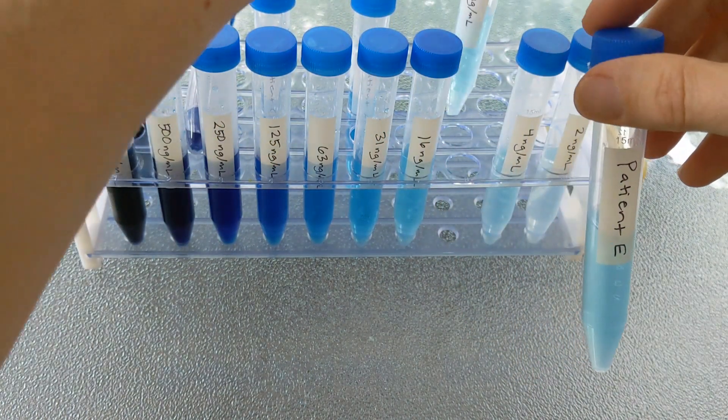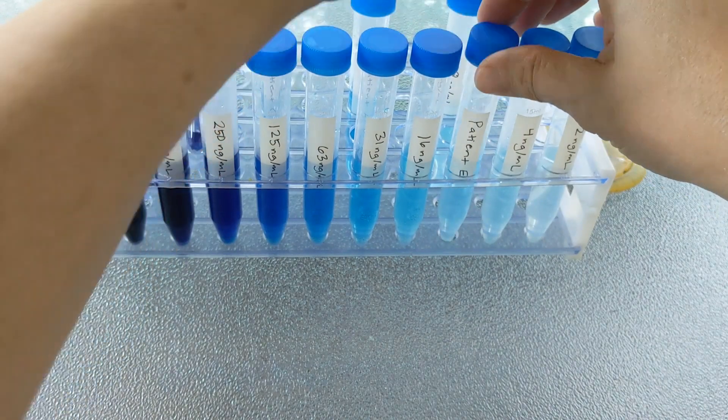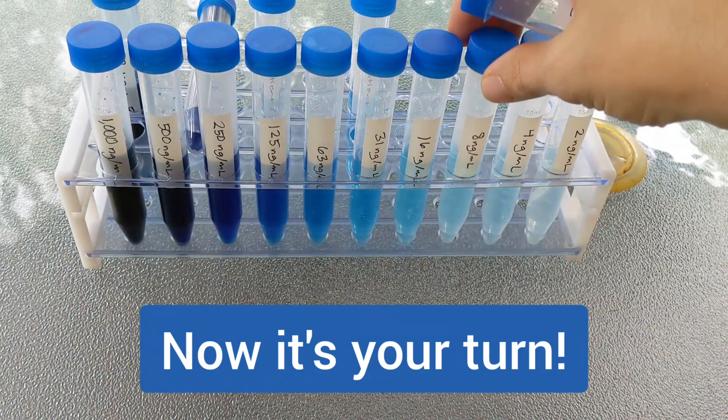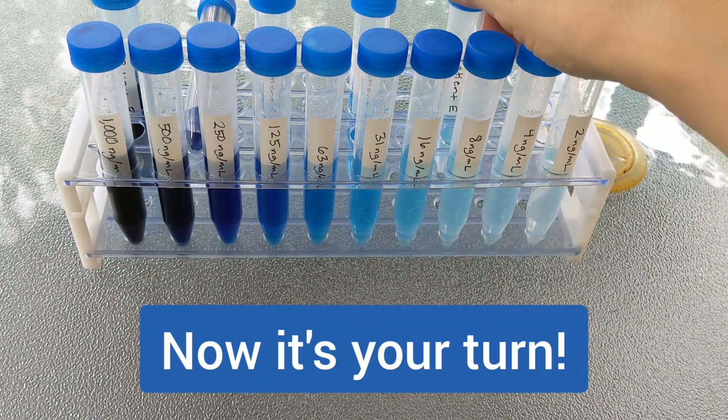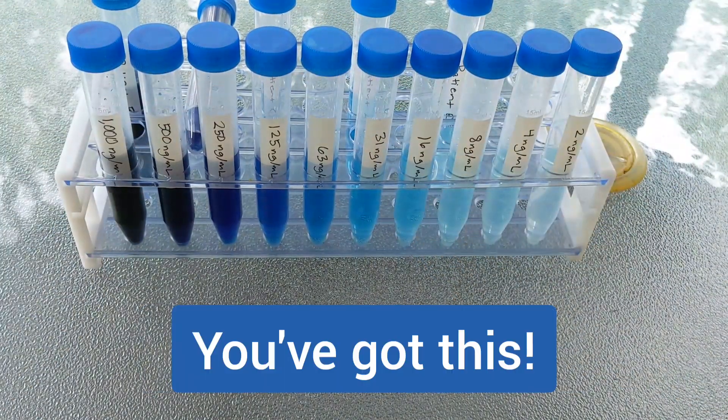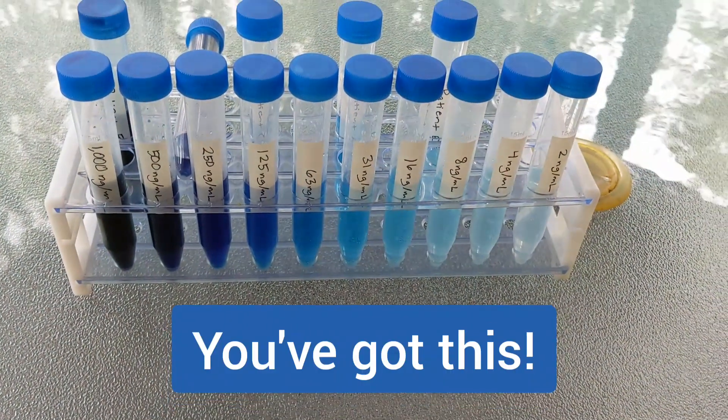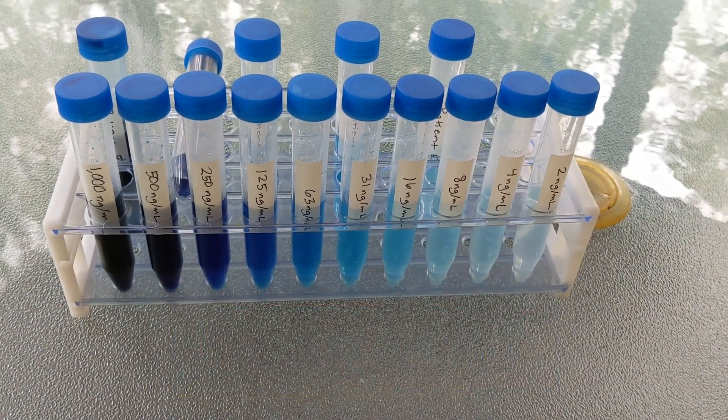So when you are checking your own results, you want to go for the best color match. And then just make sure that you have your serial dilutions correctly calculated. Make your comparison. And that's how you'll know the antigen level of your patients.